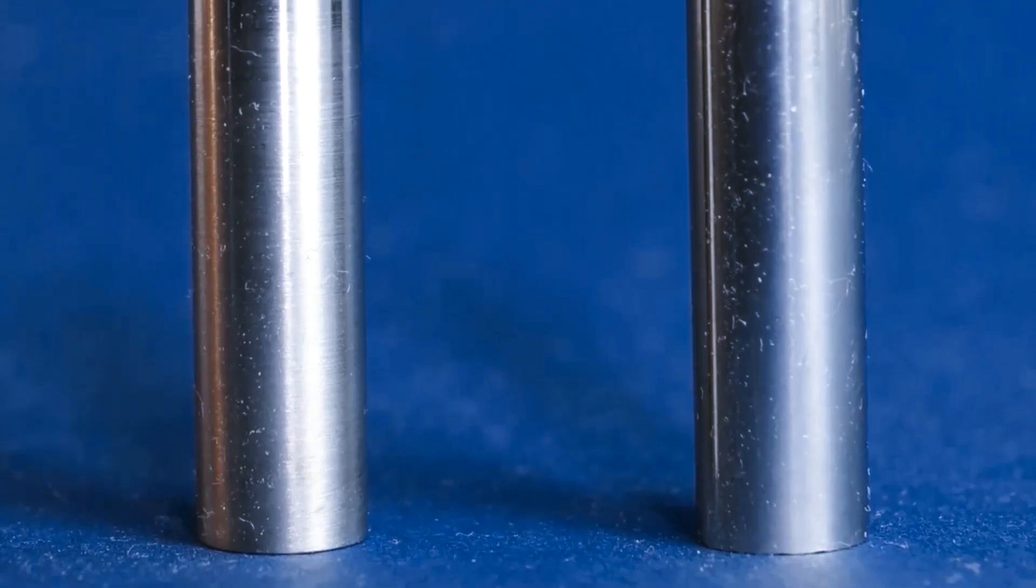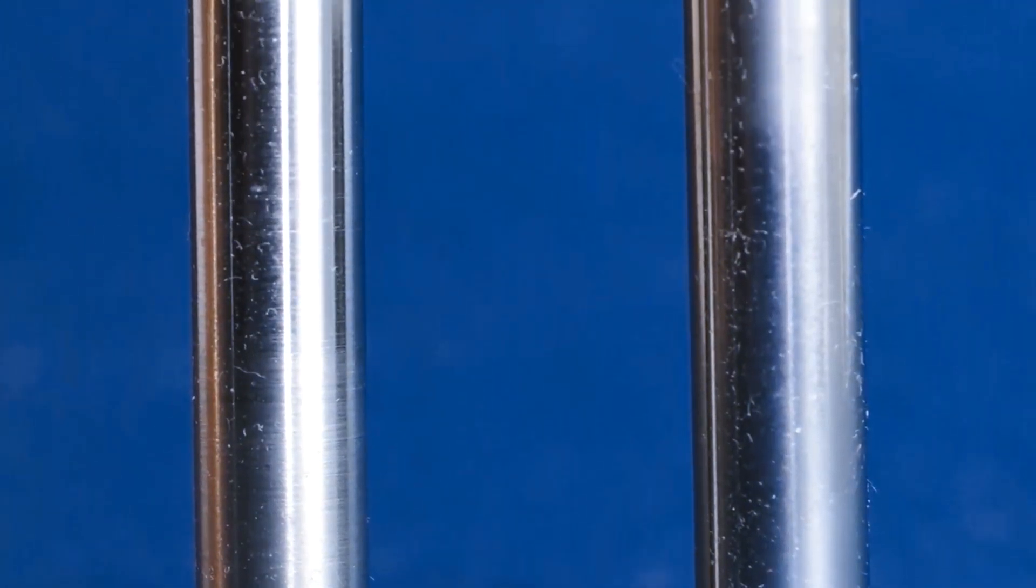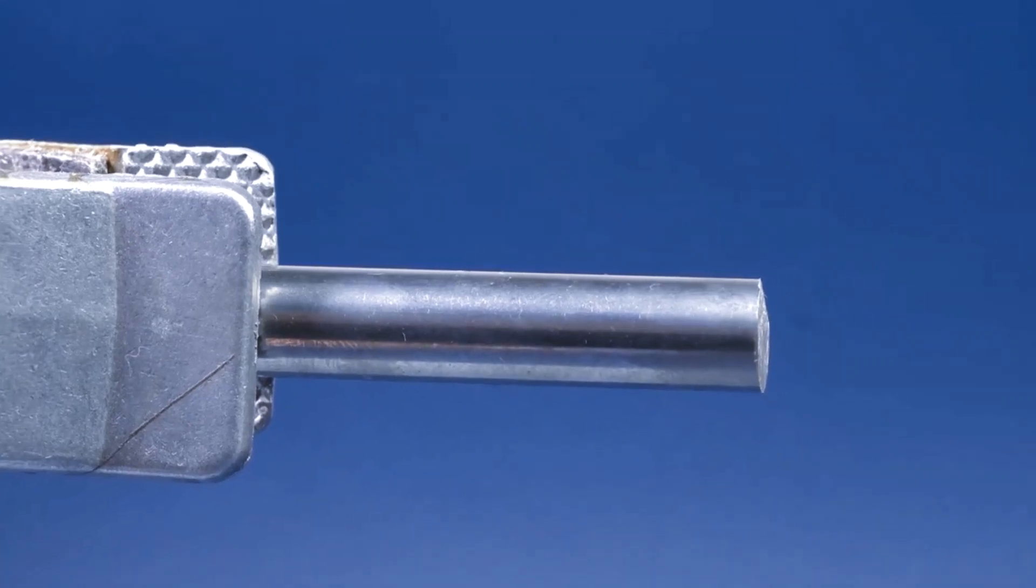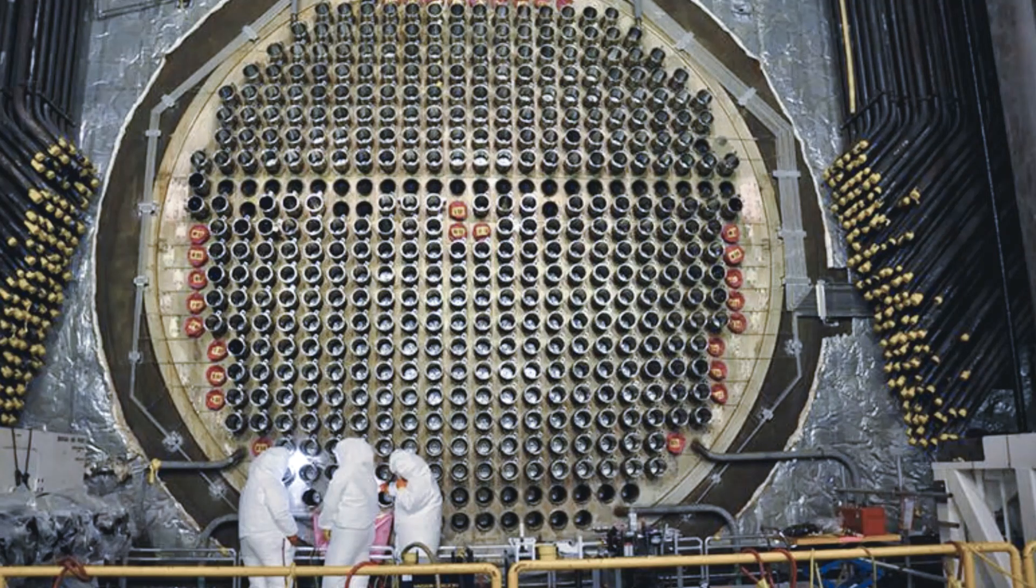A second method is neutron activation, where molybdenum-98 in target material captures a neutron. This is done in power reactors, usually RBMK or CANDU.